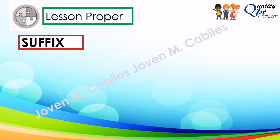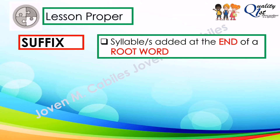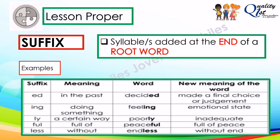Now let's have suffixes. Unlike prefix, which is added at the beginning of the root word, suffixes are syllables added at the end of a root word. The suffix '-ed' means 'in the past.' If you have the root word 'decide' and add the suffix '-ed,' this will become 'decided,' and the new meaning is 'made a final choice or judgment.' The next one is '-ing,' which means 'doing something.' If you have the root word 'feel' and add the suffix '-ing,' this will become 'feeling,' and the new meaning is 'emotional state.'